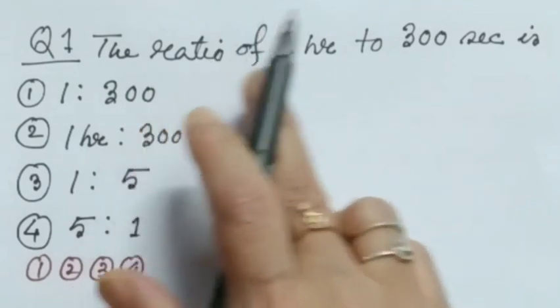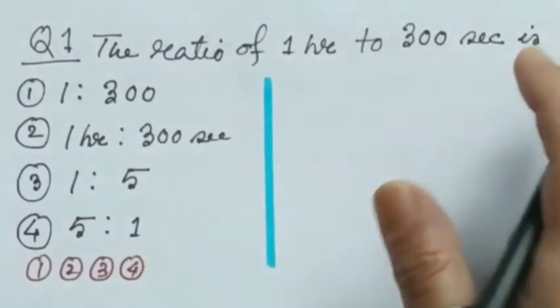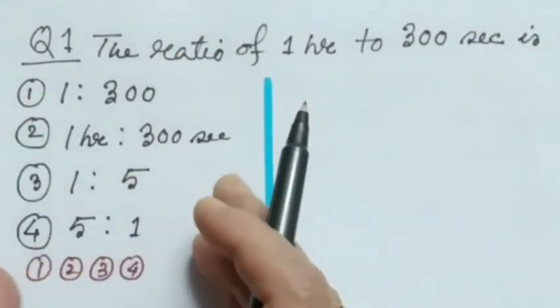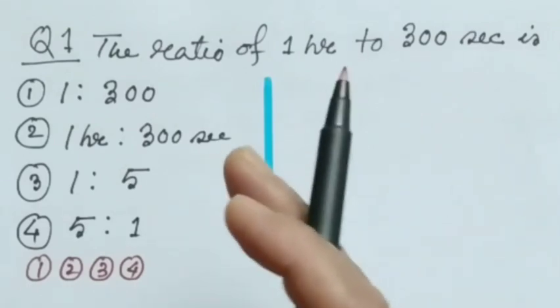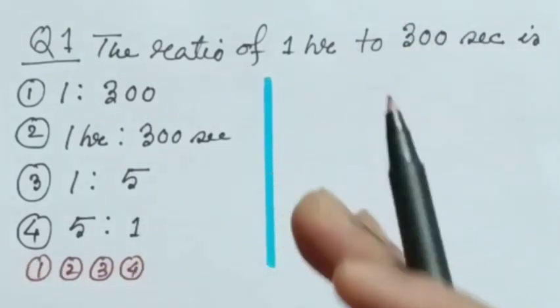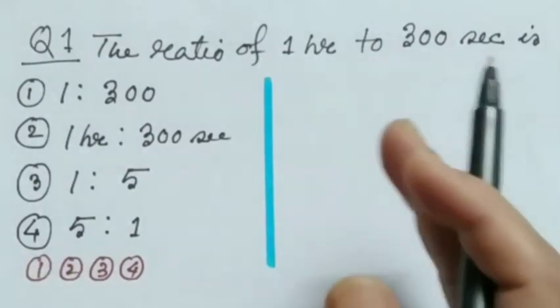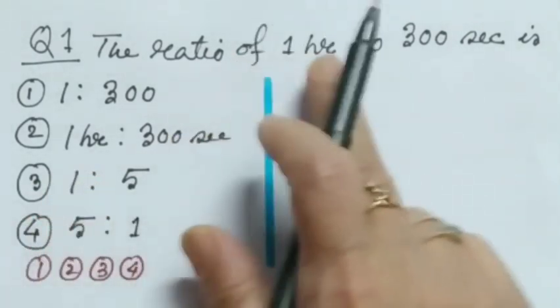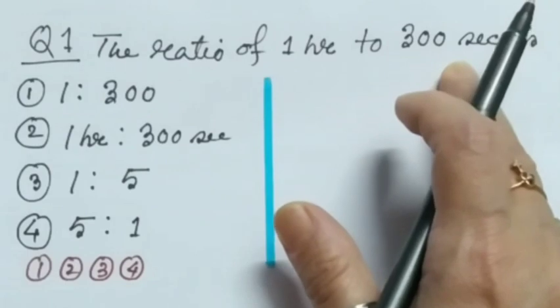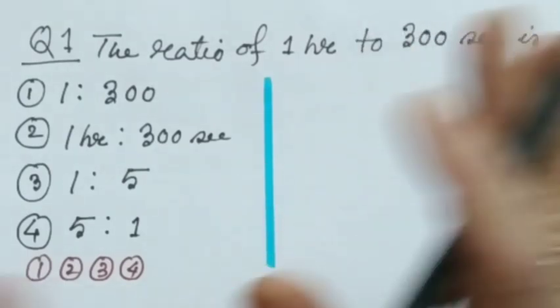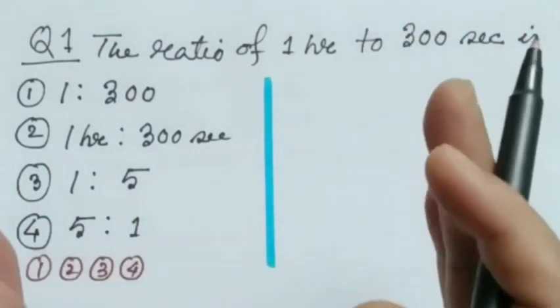Question 1. The ratio of 1 hour to 300 seconds is, here 4 options are given. Dear children, after getting this type of question, what to think first? Yes, simple. Firstly, the units of the numbers should be same. And secondly,